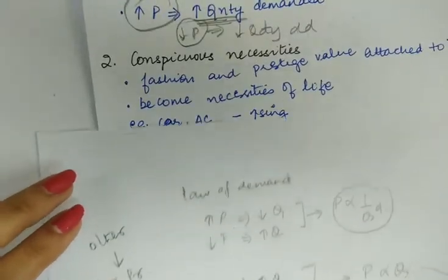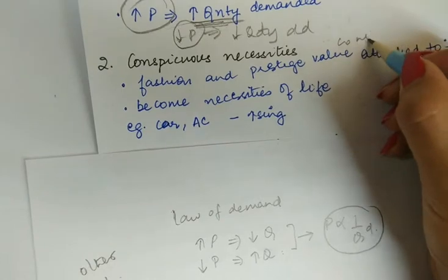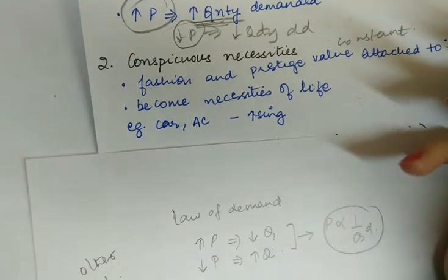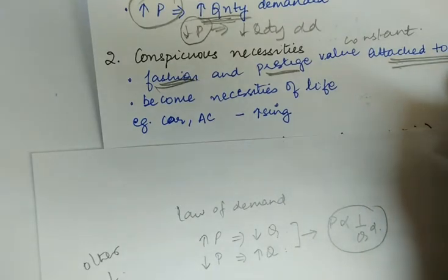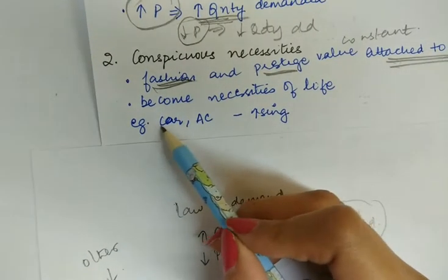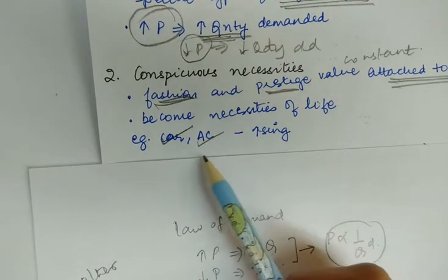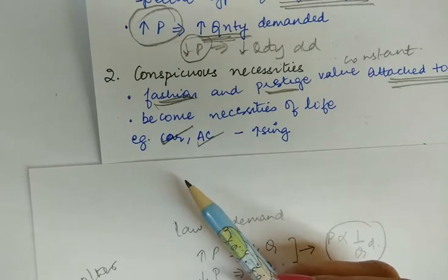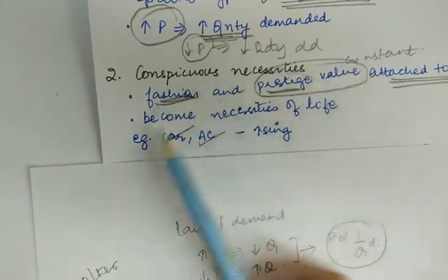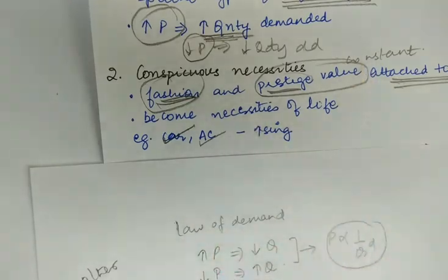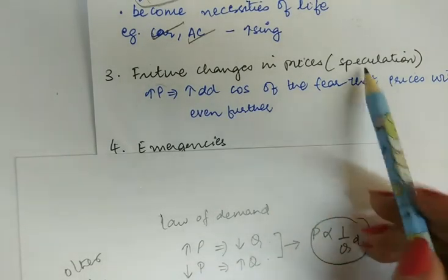The other situation is of conspicuous necessities. Certain commodities, through their constant usage, become necessities of life, and fashion and prestige values are attached to them. For example, in spite of the high price of air conditioners, we demand more of them because the usage of these commodities is associated with prestige value or fashion.